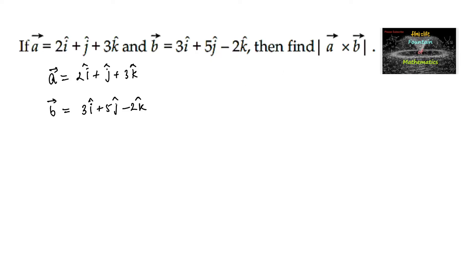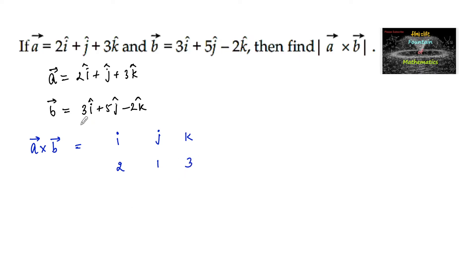First, let us find a cross b — the cross product of these two vectors — taken in determinant form: i, j, k in the first row; the scalar components of vector a, 2, 1, and 3 in the second row; and scalar components of vector b, 3, 5, and negative 2 in the third row.